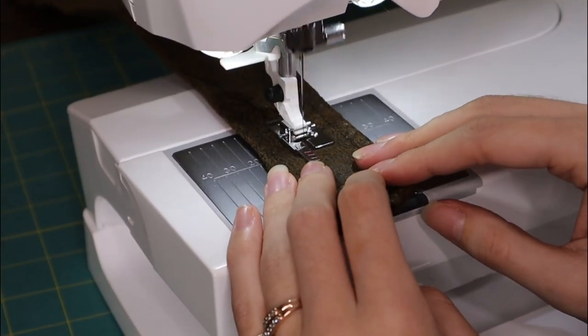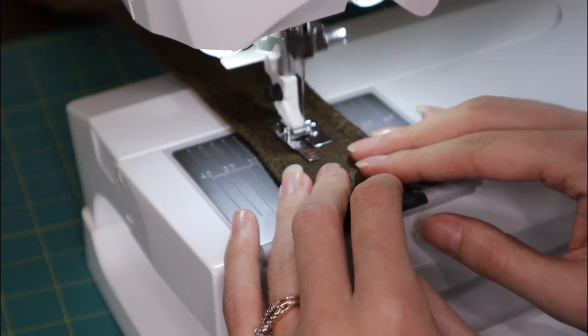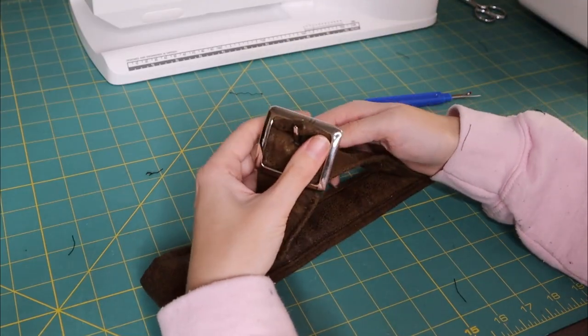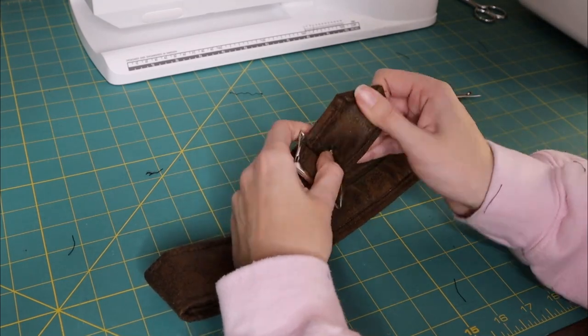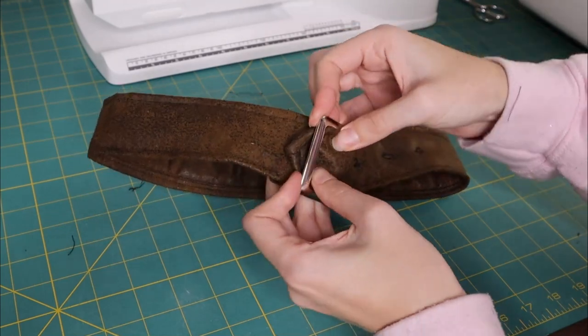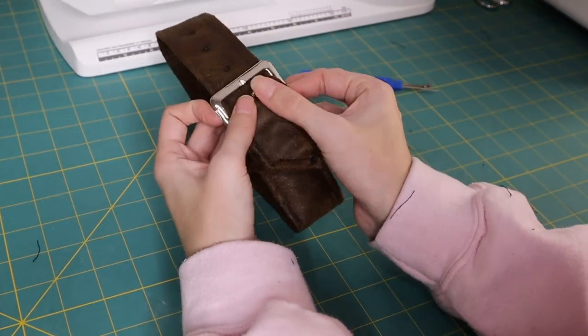Now we need our belt to actually be functional and be able to hold up your cosplay pieces and buckle shut. And that means more buttonhole stitches. Now the buckle will just go through the buttonhole on the other side, and we have a working belt for our cosplay. And now that the belt works, we can do a few other decorative things if we would like.